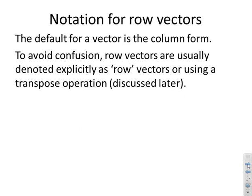For row vectors: the default for a vector is the column form, so if you say you have a vector, people will automatically assume it's a column matrix. If you want it in row form, it would be more normal to specify it as a row vector, just to avoid confusion.